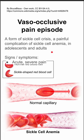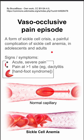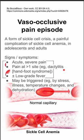The signs and symptoms of vaso-occlusive pain episode: patients will have acute severe pain in at least one site. If it's in the hands and feet, it's called dactylitis. It can also be in the chest or other places in the body. Patients might also have a low-grade fever. Sometimes this episode is triggered by something like stress, illness, temperature changes, or dehydration.